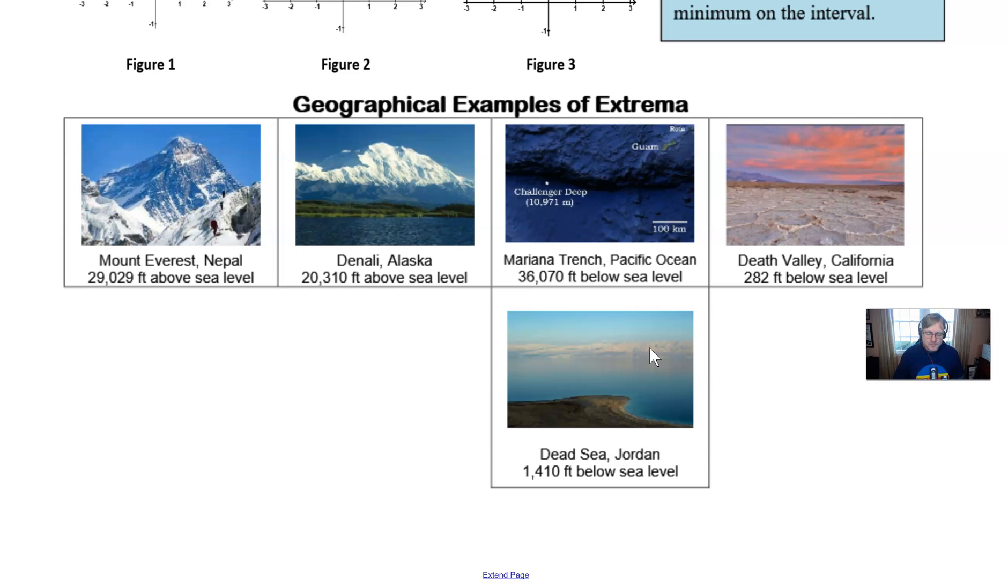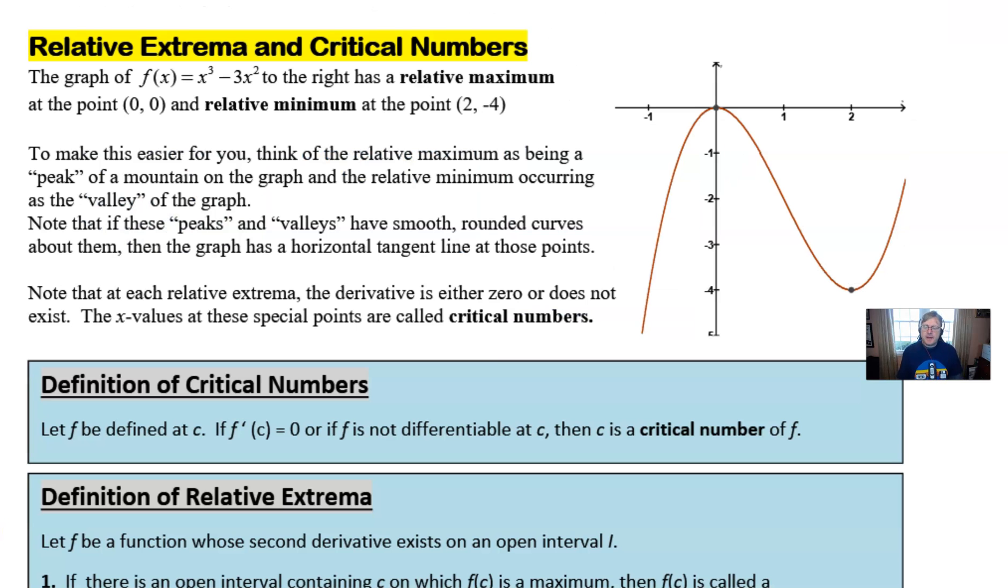In the second page here we talk about relative extrema and critical numbers and I've given you a graph. It's a cubic graph x cubed minus 2x squared to the right and I say that it has a relative maximum at the point (0,0) and a relative minimum at the point (2,-4) and those are two facts we're going to call these relative minimum because the fact that this graph is considered defined on the entire interval